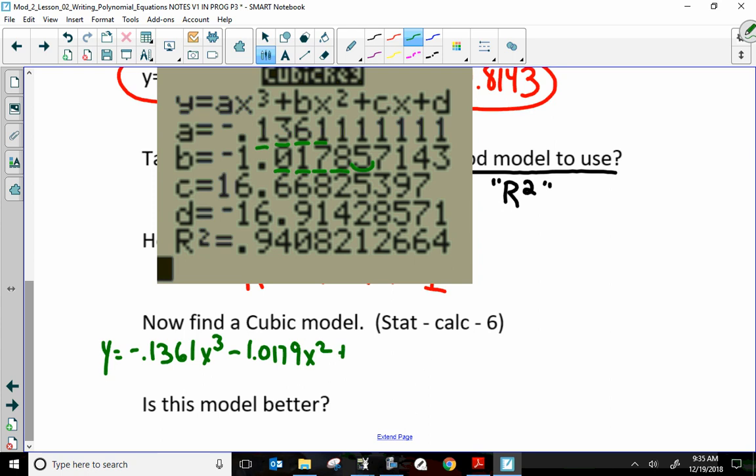Plus c, x. So, plus 16.668, 2. That 2 will round up to a 3. So, 6, 6, 8, 3, x.